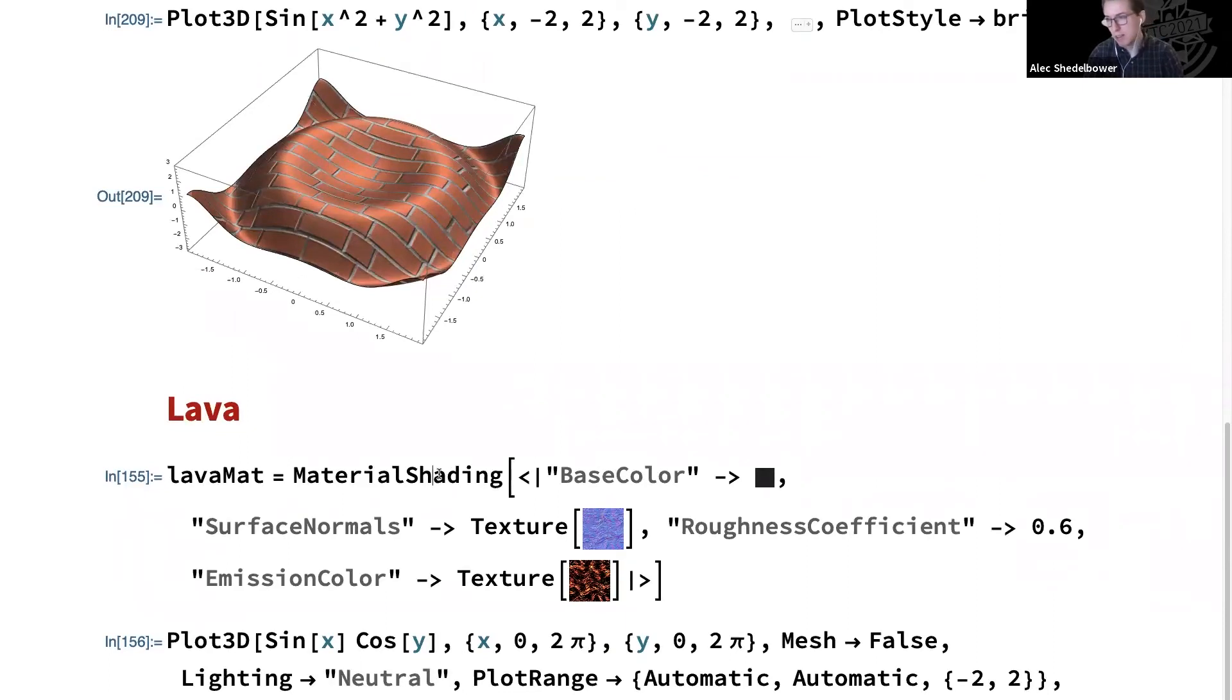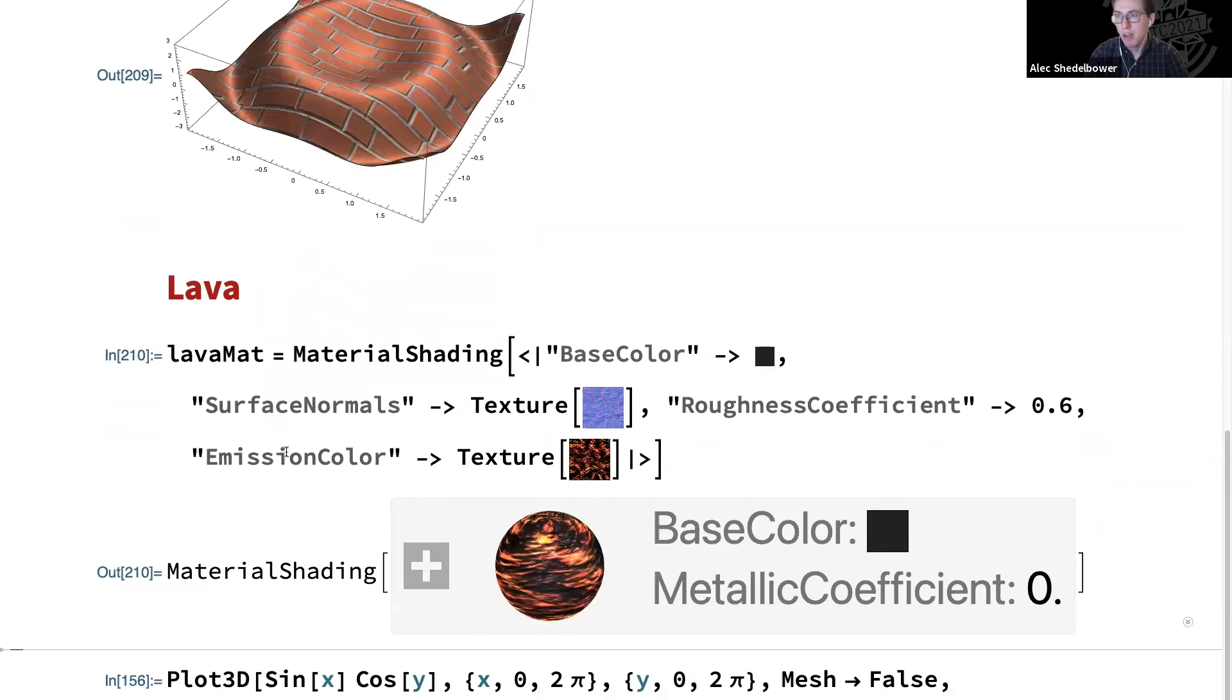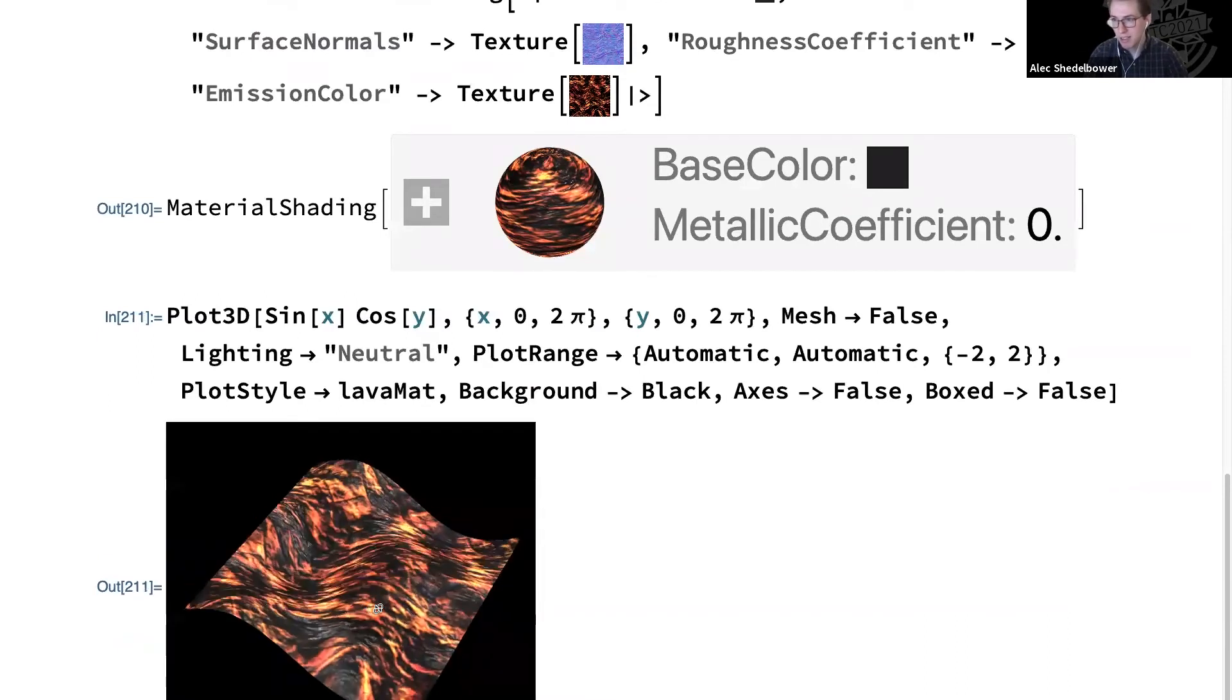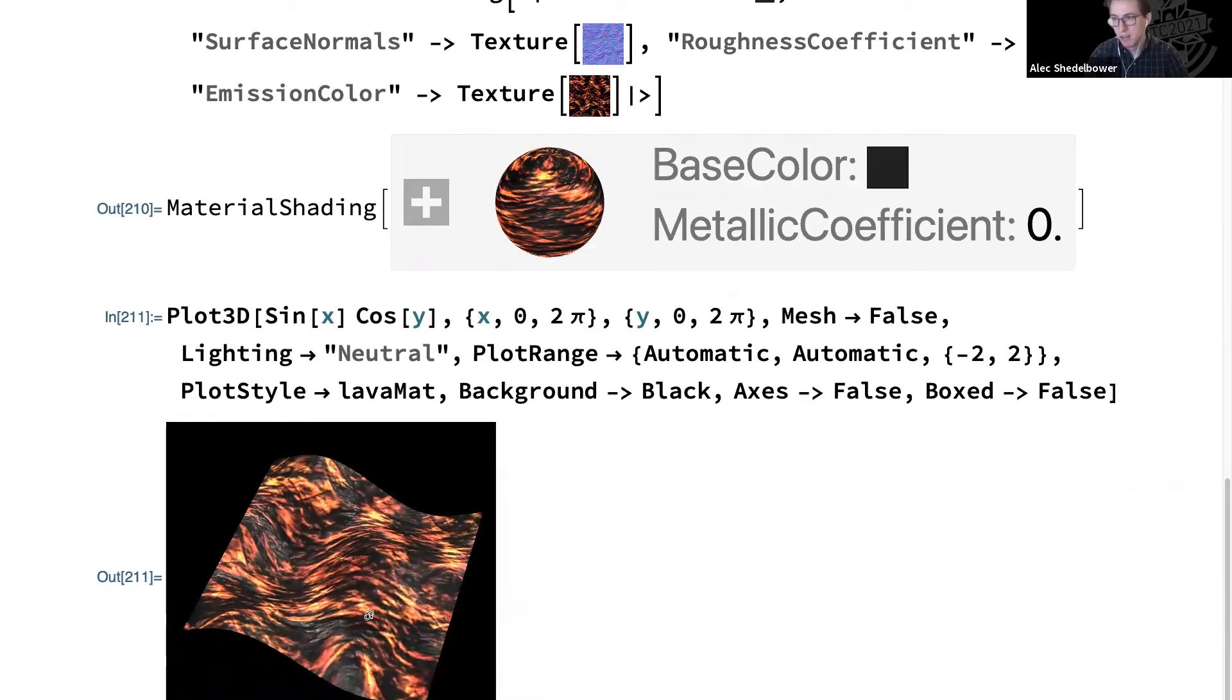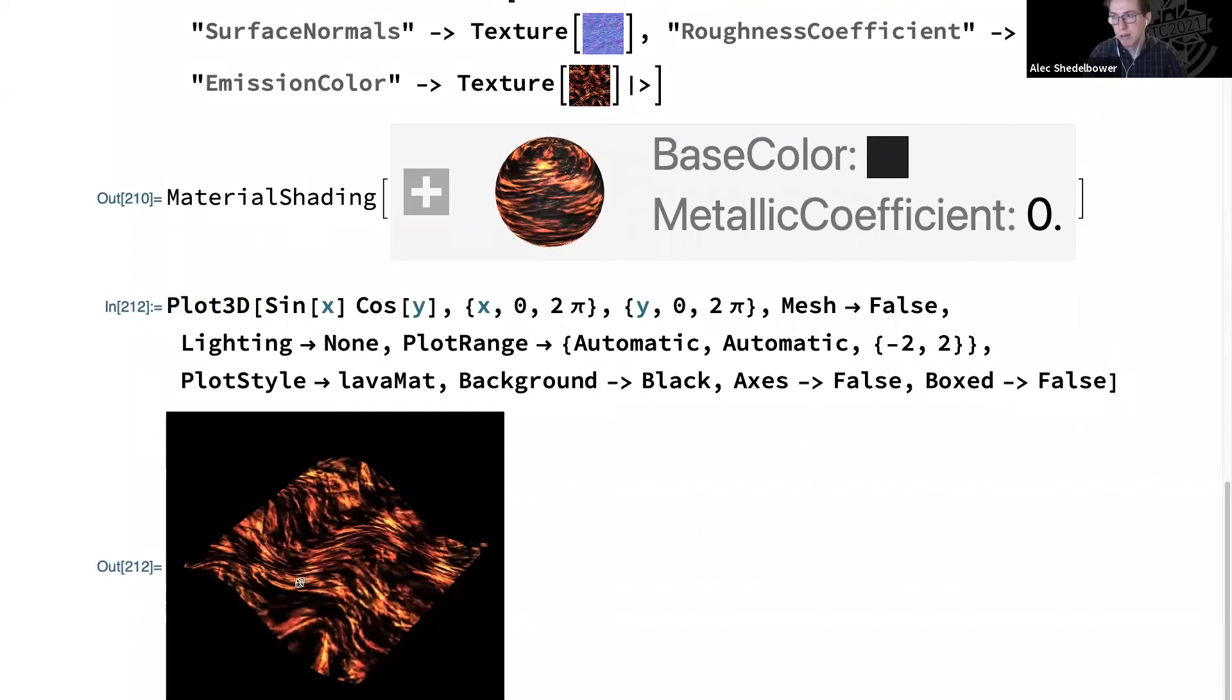Another example here we have is lava. It's similar to the brick. However, instead of using a base color, we are mapping an emission color. So here we'll actually have the surface be glowing the color as lava glows because it's so hot. So if we map that to a plot, we can see it here. And now this glowing is not based on the actual light. So if we set the lighting to none and evaluate, you can see even with no light that glow is still coming through.